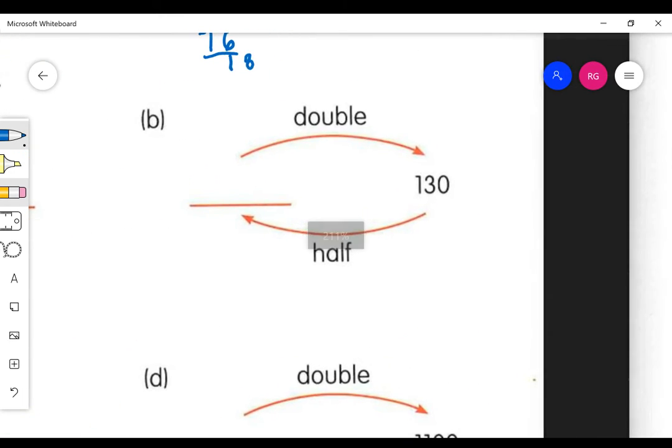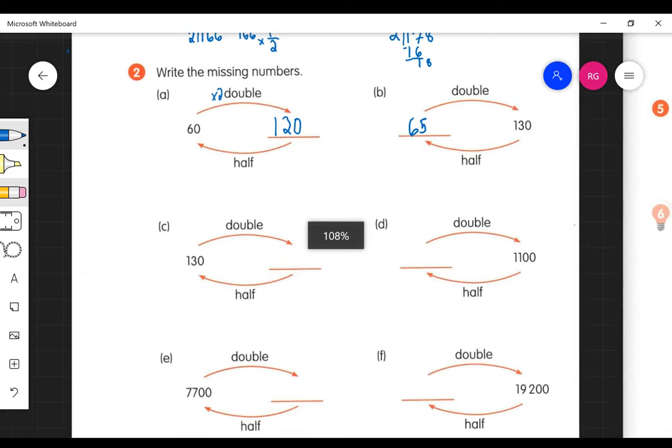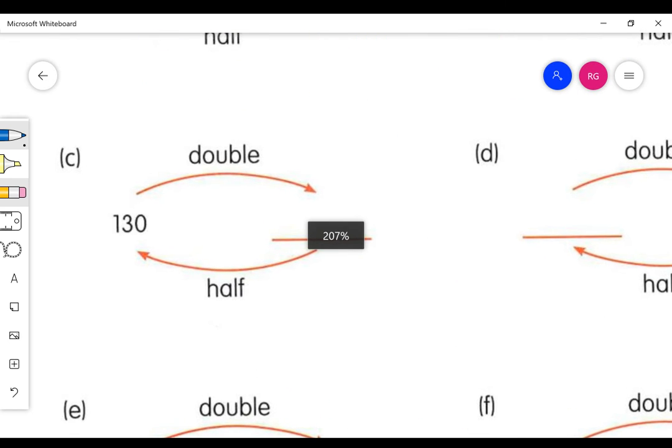And then for B, we have 130 on the right-hand side. So half of 130, we could think of it like that, is 65. And then 65 doubled is 130, so it checks out.